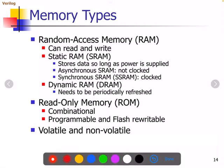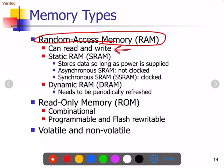In different types of memories, the first type of memory we will be understanding here is RAM, that is random access memory. We can read and write data into this memory — both operations can be done on this memory. There are different variants of RAM like static RAM and dynamic RAM available.